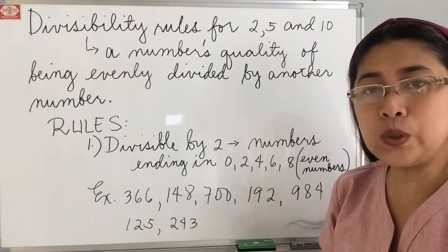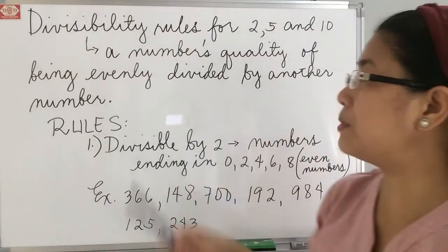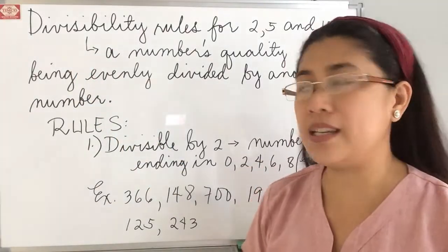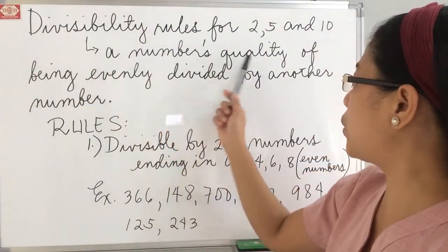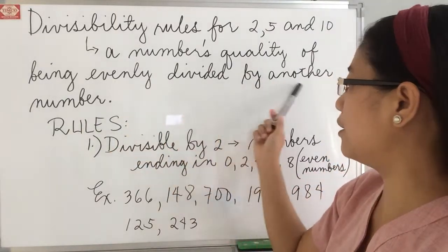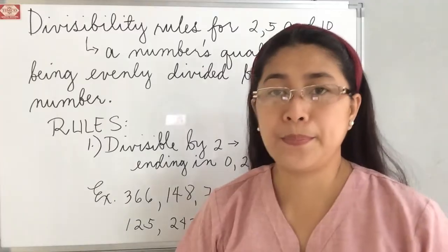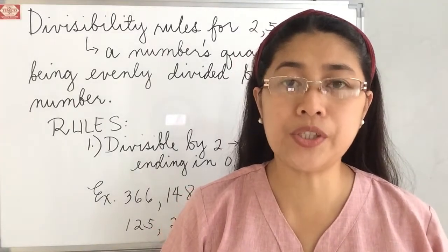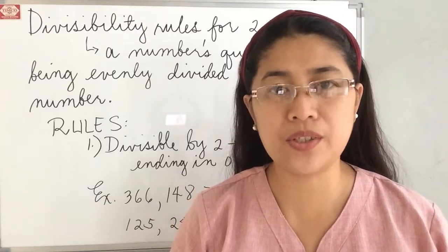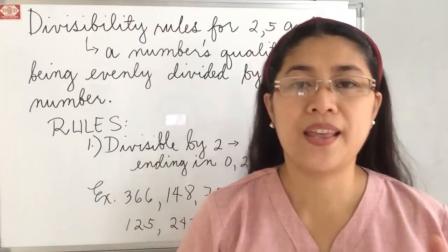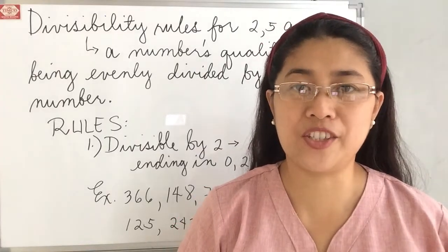But before we talk about the rules, let's talk about the word divisibility. When we say divisibility, it is a number's quality of being evenly divided by another number. Meaning to say that if you divide a certain number by a certain number, it will give you a whole number as a quotient. So there is no remainder.